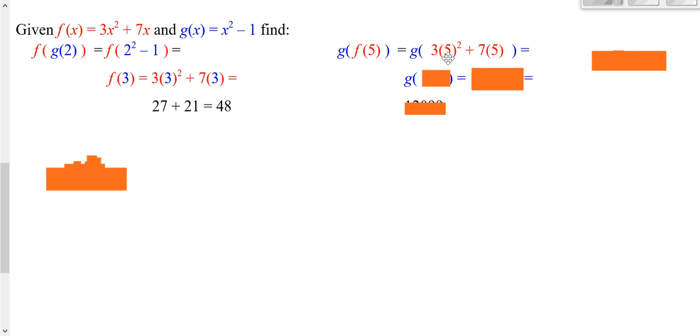Well, now I can work this out. 5 squared is 25 times 3 is 75, plus 5 times 7 is 35. I add that together, I get 110.